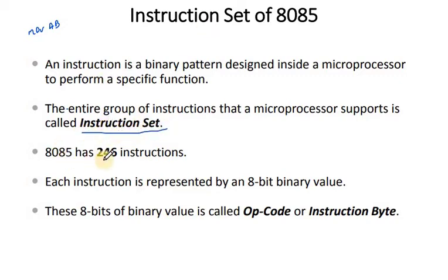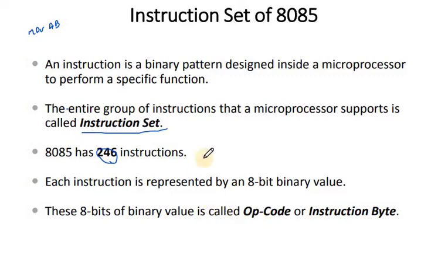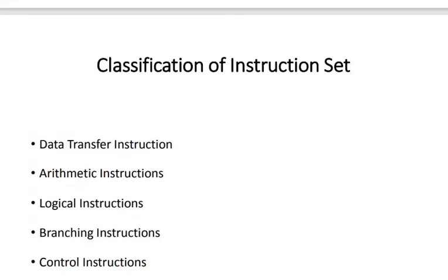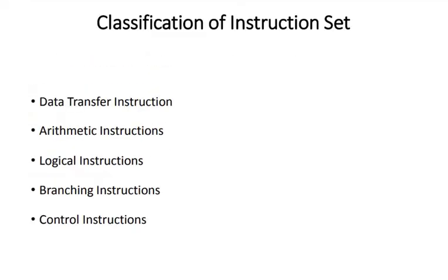An important thing to note: 8085 has 246 instructions — keep this number in mind. Each instruction is represented by an 8-bit binary value, and this 8-bit binary value is called an opcode or instruction byte. Now we will deal with the classification of the instruction set, which is also another important topic.